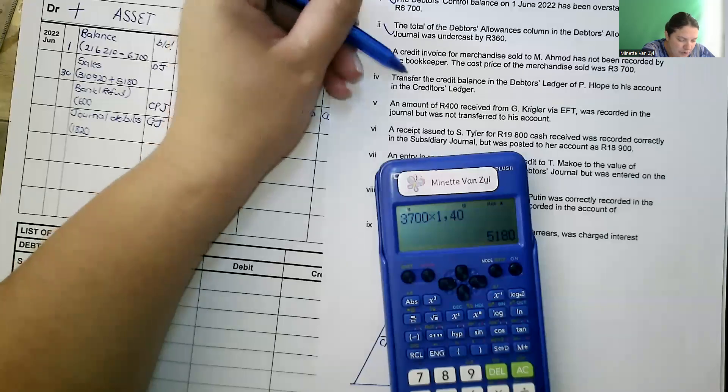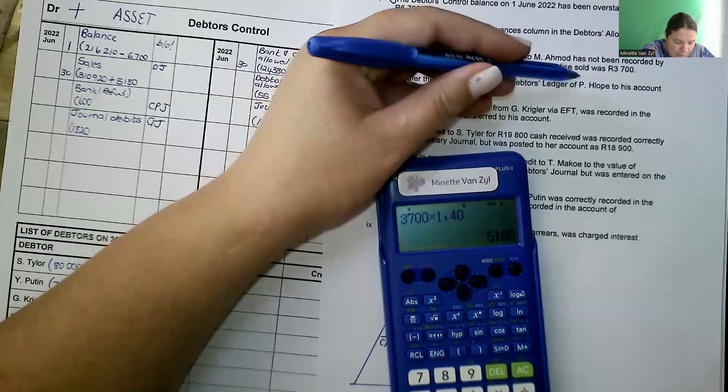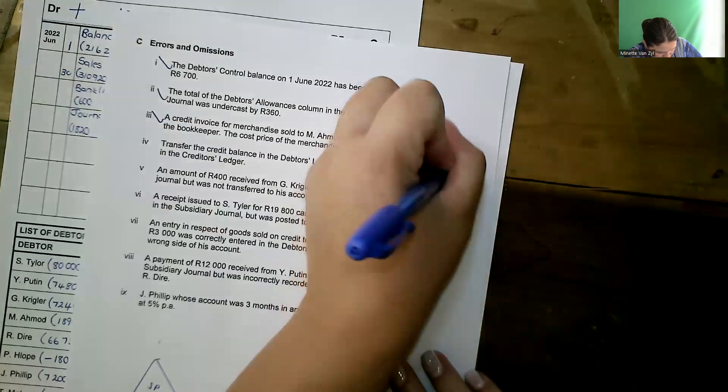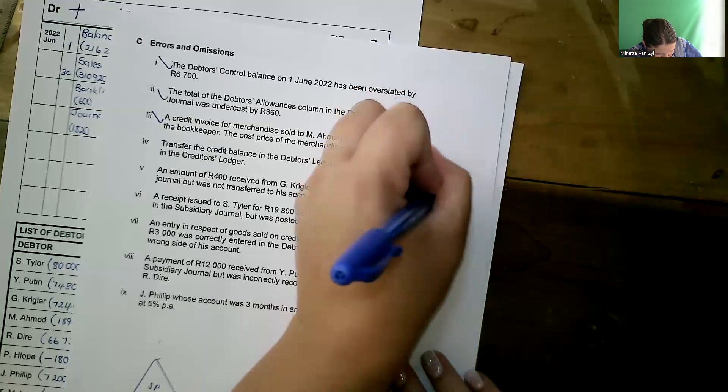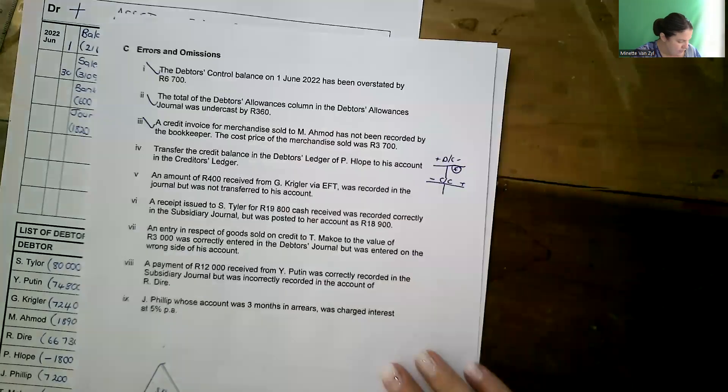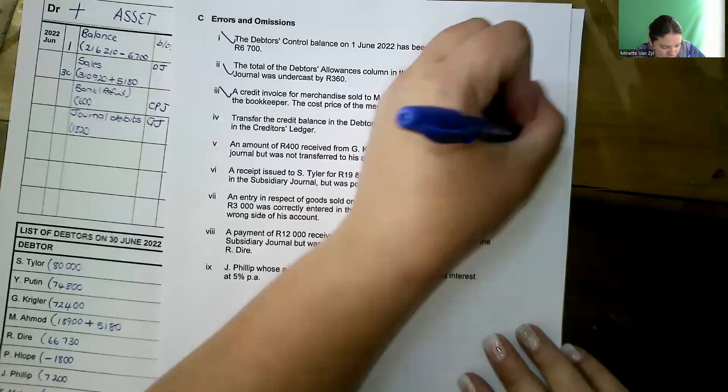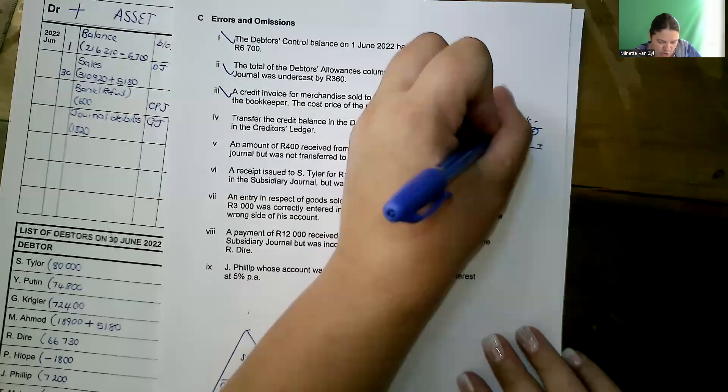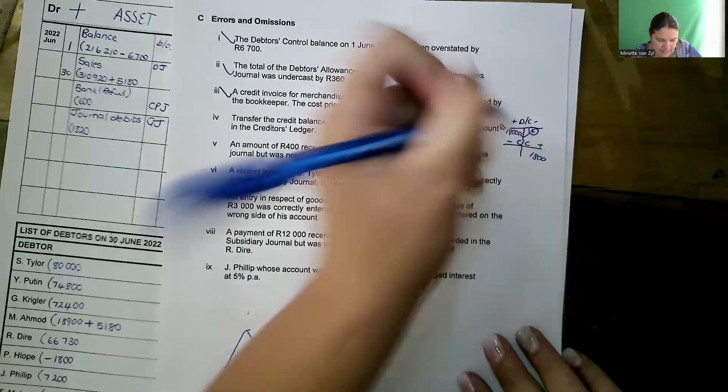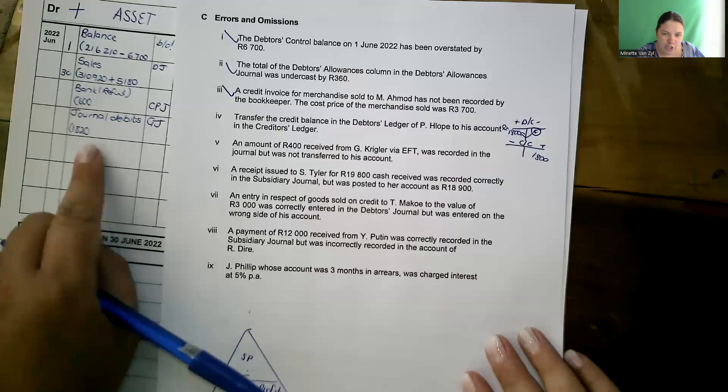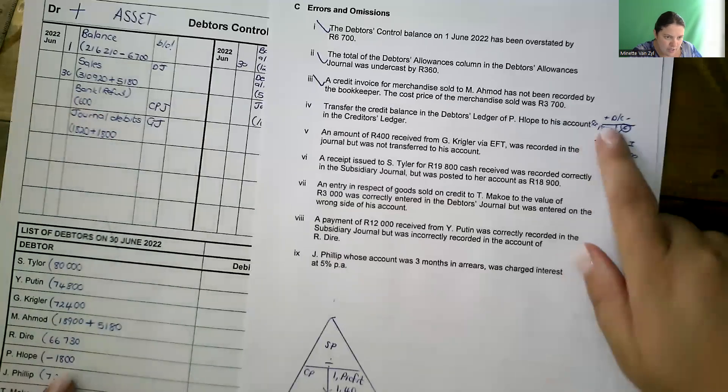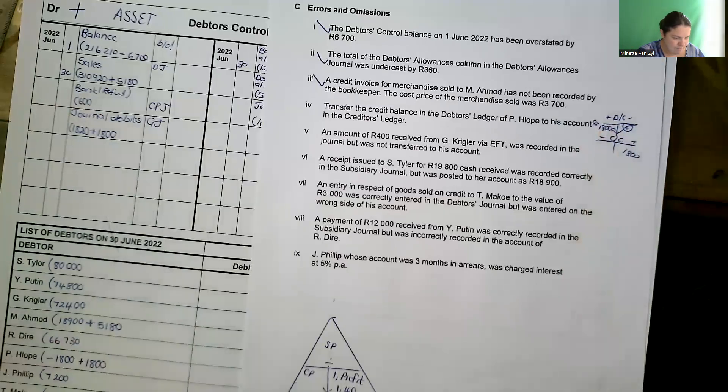Number four, transfer the credit balance in the debtors list of P. Loper to his account in the creditors ledger. So we have a debtors control, creditors control. He has a balance in the credit side. His balance is 1,800. When I transfer him, your debtors control will increase with 1,800. And this is done in the general journal. And every debit has a credit. So in your general journal, journal debit, we will plus 1,800. And Loper's account will have to plus 1,800. And it's done.